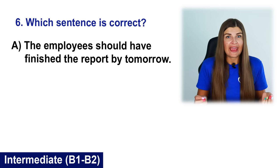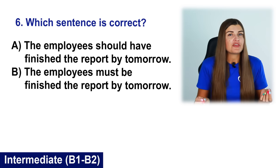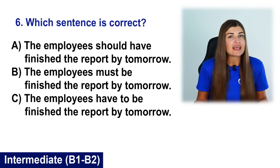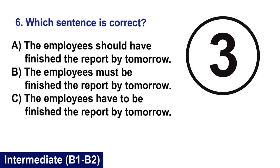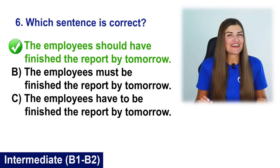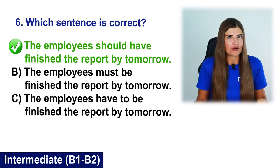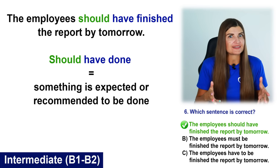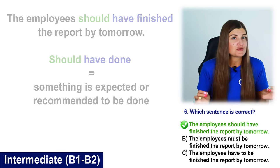Which sentence is correct? A. The employees should have finished the report by tomorrow. B. The employees must be finished the report by tomorrow. C. The employees have to be finished the report by tomorrow. The correct sentence is A: The employees should have finished the report by tomorrow. This means it's recommended or expected that the employees have already completed the report. We use the construction should have done to say that something is expected to be done.